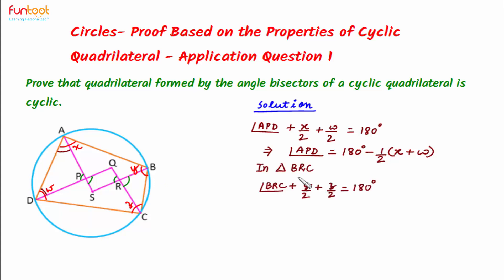So in triangle BRC we will have angle BRC plus Y by 2 plus Z by 2 is equal to 180 degrees.